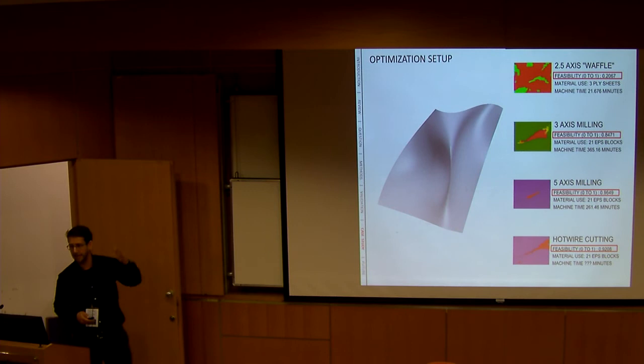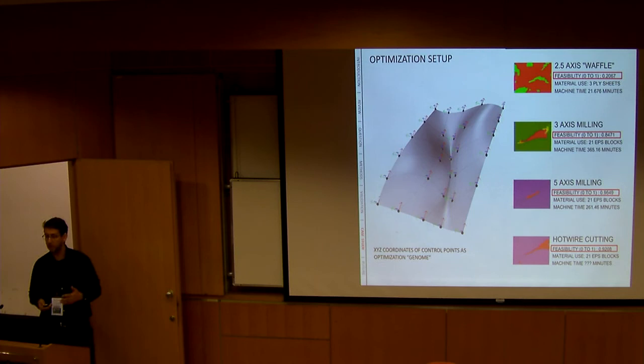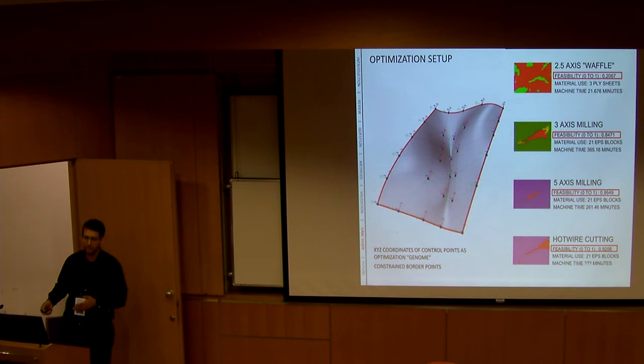And the idea is to use my setup as it is, use the feasibility, one of these as an optimization criteria. Let's say I want to optimize for five-axis milling. So I'm giving this as the optimization goal. And the genes, the things that can change the optimization are the control points that create the surface. And the border points can be constrained either only in Z or in X and Y, depending on what you want from the geometry.